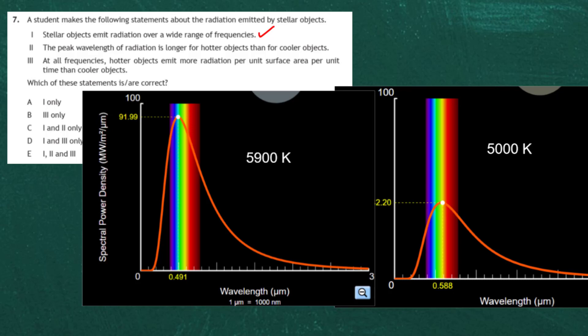Statement 2 says the peak wavelength of radiation is longer for hotter objects than for cooler objects. You can see the 5900 kelvin object has its peak at 0.491 micrometers, but the cooler object's peak is at 0.588 micrometers. So it's the cooler objects that have the longer peak wavelength. Statement 2 is therefore wrong — the hotter the object, the shorter the peak wavelength.